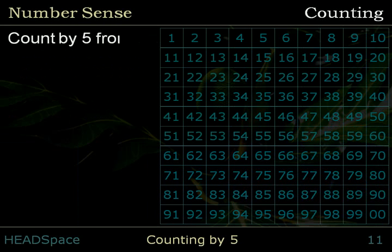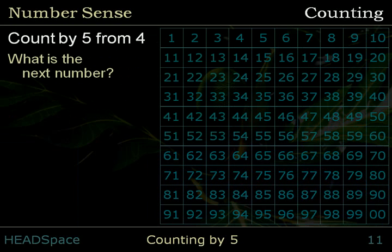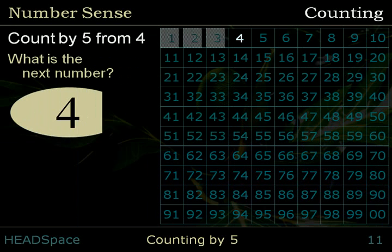Count by 5 from 4. What is the next number? 4, 9, 14, 19, 24, 29, 34...